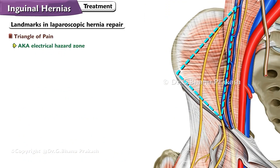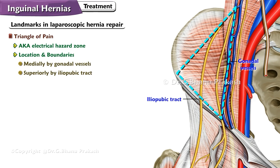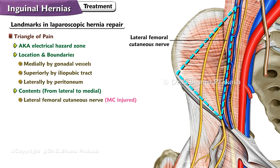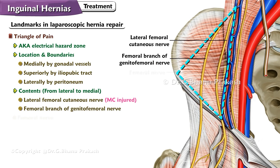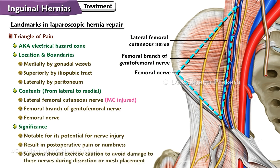The Triangle of Pain, also known as an electrical hazard zone due to the presence of important nerves, is bounded medially by the gonadal vessels, superiorly by the iliopubic tract, and laterally by the peritoneum. From lateral to medial, it contains the lateral femoral cutaneous nerve (the most commonly injured nerve in laparoscopic hernia repair), the femoral branch of the genitofemoral nerve, and the femoral nerve. This triangle is notable for its potential for nerve injury, which can result in postoperative pain or numbness.